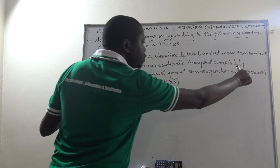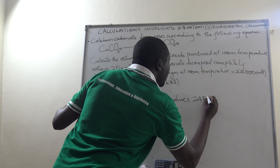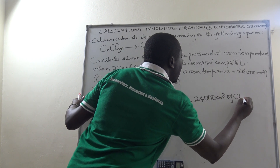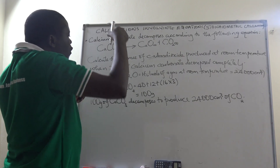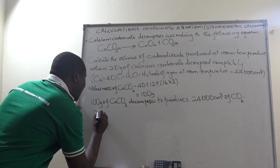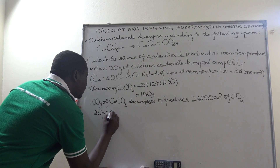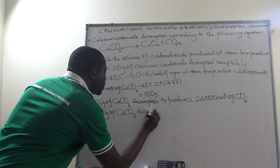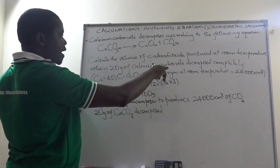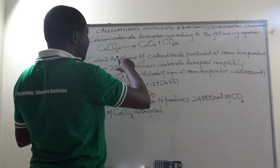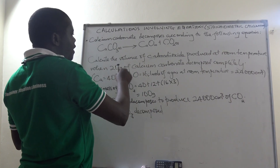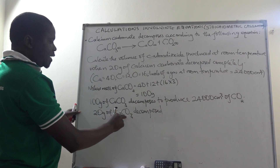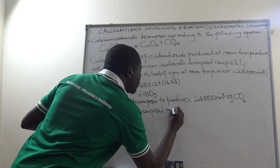...one mole of carbon dioxide, whose volume is 24,000 cubic centimeters of carbon dioxide. Now for the given mass — the 20 grams of calcium carbonate — it decomposed completely, and we need to calculate the volume of carbon dioxide produced at room temperature. So: 20 grams of calcium carbonate decomposed to produce...